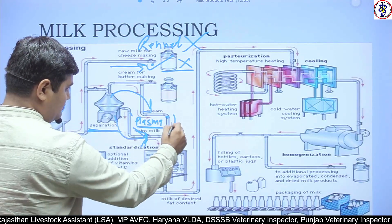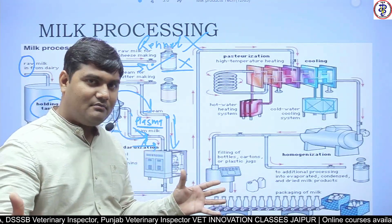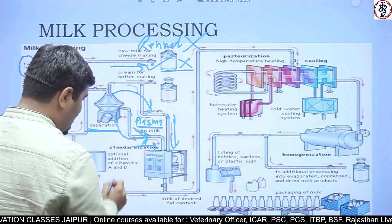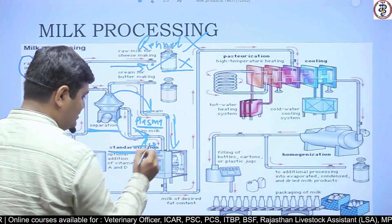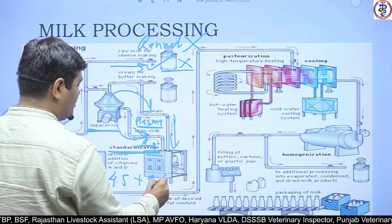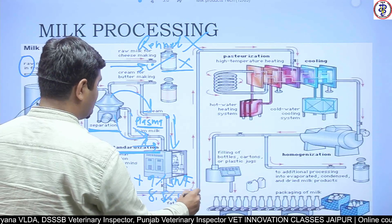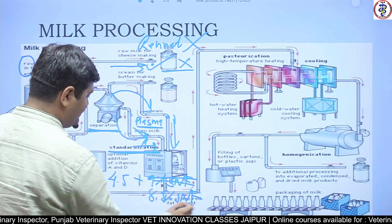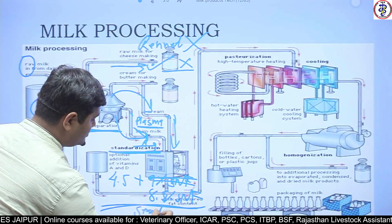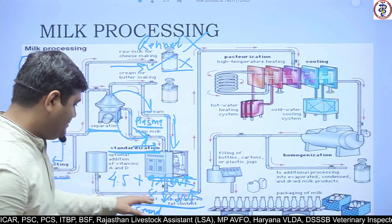After separation, you have cream and skim milk. You can make any number of combinations of fat and SNF, because skim milk is a rich source of solids-not-fat. These combinations are called standardization. For example, 4.5% fat plus 8.5% SNF is called standardized milk.